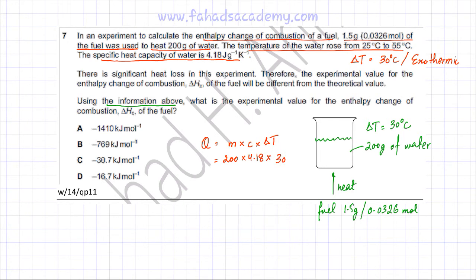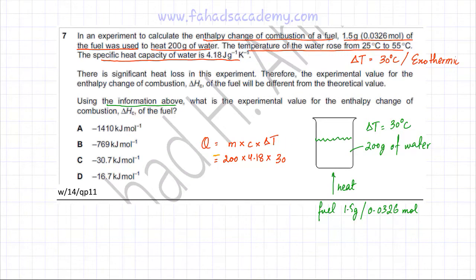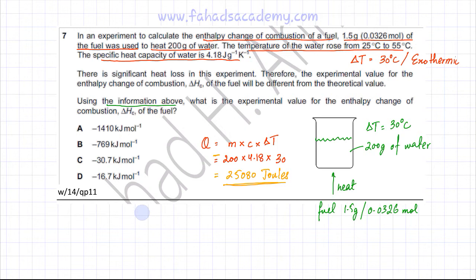Remember to put a negative sign because it's an exothermic reaction — the temperature is rising, which indicates exothermic. Calculating the energy absorbed by the water gives 25,080 joules. That is the amount of energy the water is absorbing, and that energy is coming from the fuel, meaning 0.0326 moles of fuel produces 25,080 joules.